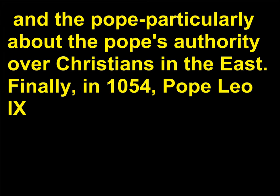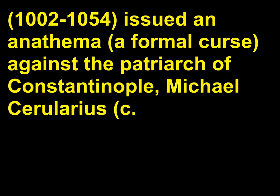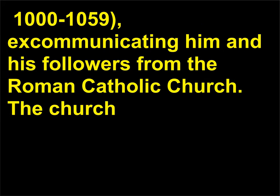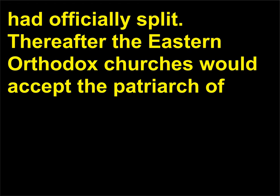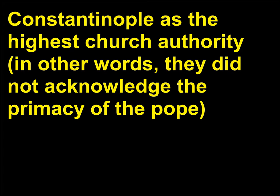and the Pope, particularly about the Pope's authority over Christians in the East. Finally, in 1054, Pope Leo IX, 1002–1054, issued an anathema — a formal curse — against the Patriarch of Constantinople, Michael Cerularius, c. 1000–1059, excommunicating him and his followers from the Roman Catholic Church. The Church had officially split. Thereafter the Eastern Orthodox Churches would accept the Patriarch of Constantinople as the highest Church authority; in other words, they did not acknowledge the primacy of the Pope.